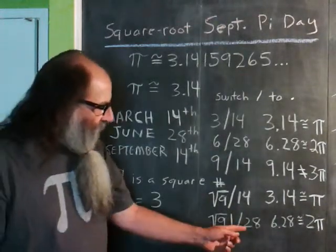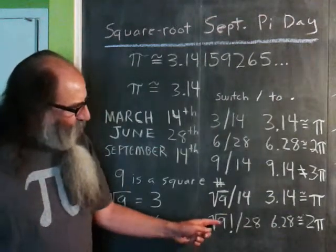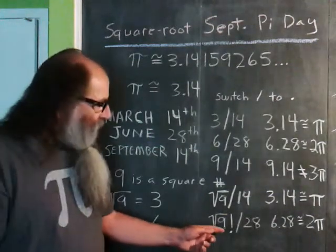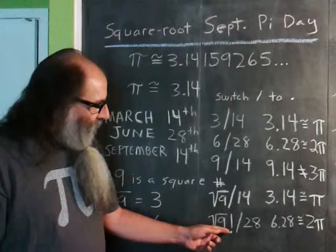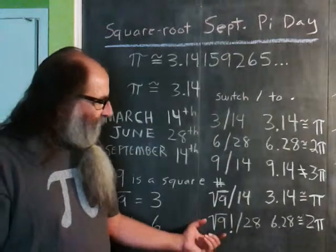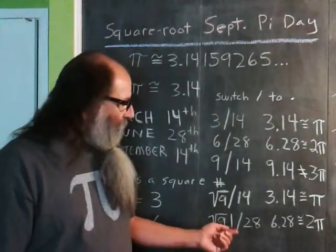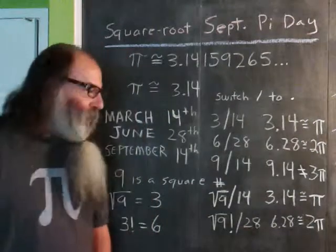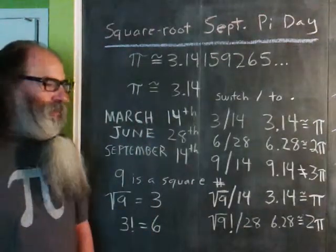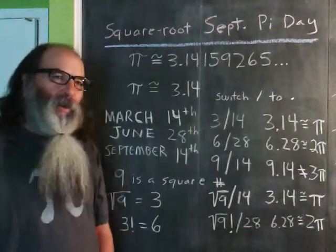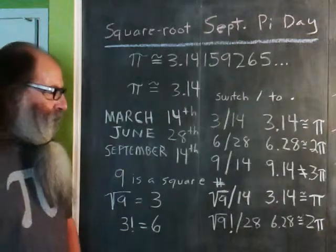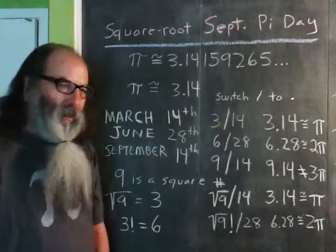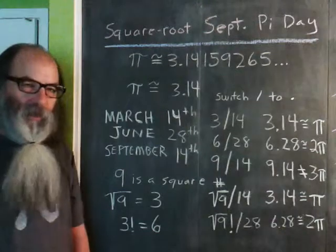On September 28th, we can take the square root of 9 and get 3, do factorial on it, and get 6. So we have 6/28. Switch the slash to a dot, we get 6.28, which is approximately 2 pi.